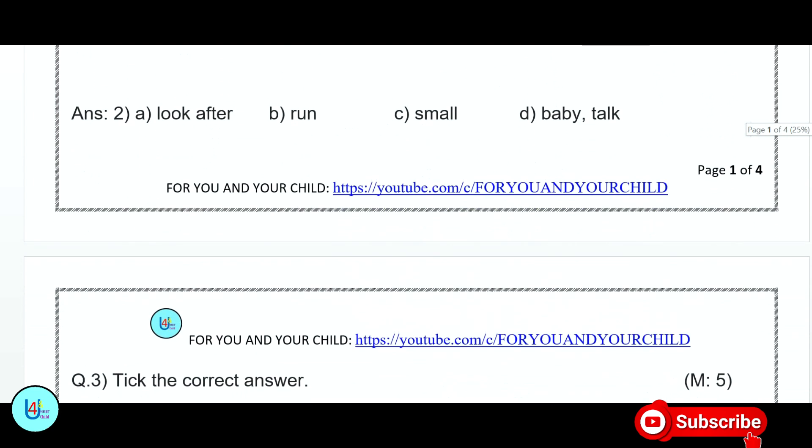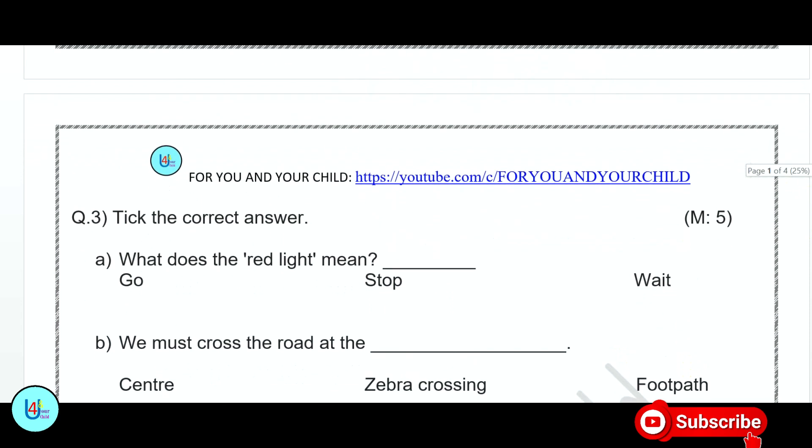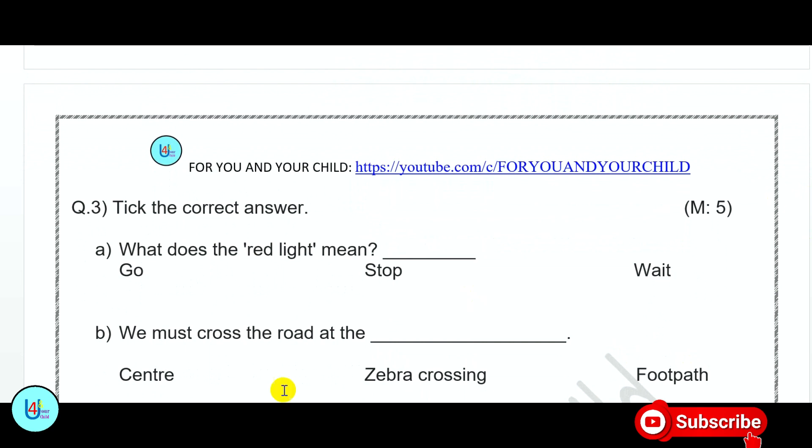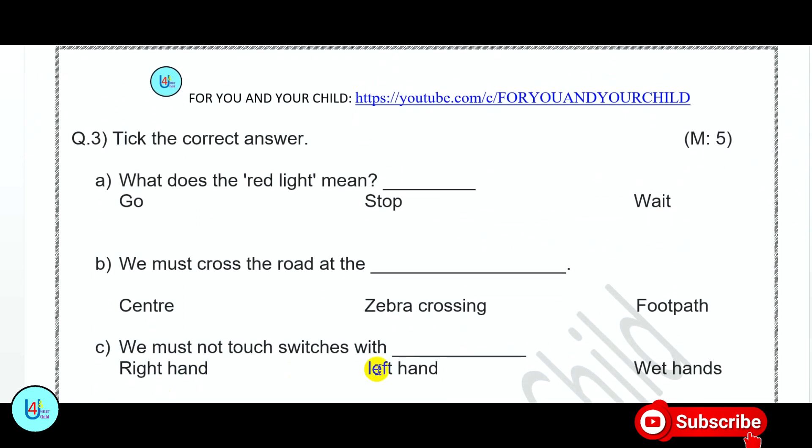Question number 3: Tick the correct answer. What does the red light mean? Go, Stop, Wait. You have seen traffic lights. There are red, green and yellow colors. What does the red mean? Stop. We must cross the road at the blank. We must cross the road at the blank. Where should we cross the road?